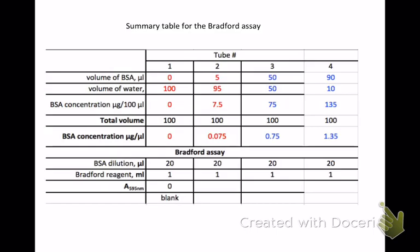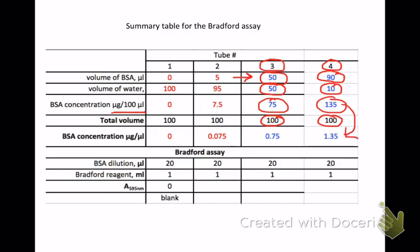Let's continue on and do two additional tubes. Here are tubes three and four. In this case we've added 10 times as much BSA — 50 microliters. Of course we're using 50 microliters of water because our total volume in all cases is 100 microliters. In tube four we've got 90 microliters of BSA and only 10 microliters of water. When we do the calculations, we've got 75 micrograms of BSA and 135 micrograms, and dividing by 100 gives us 0.75 and 1.35.